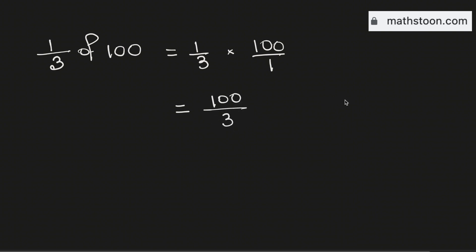Now let us find it using the long division method. Now 3 times 3 is 9. Subtract, we get 1. Now we need to bring this 0 here.